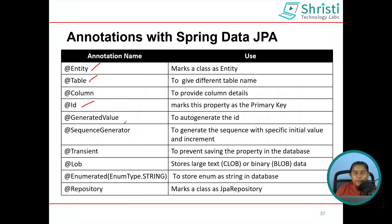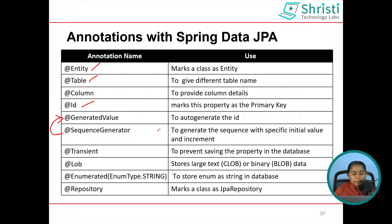The next annotation is @Id — this marks a particular property as the primary key. Then, @GeneratedValue: whenever you want to auto-increment the ID, use @GeneratedValue. It will automatically create a sequence with the model class name underscore 'seq' as the sequence name. The next one is @SequenceGenerator. The sequence generator works together with @GeneratedValue. Use @SequenceGenerator if you want your sequence to start with a specific initial value and an increment value.